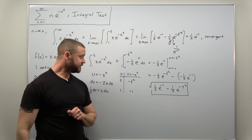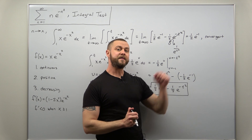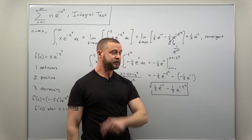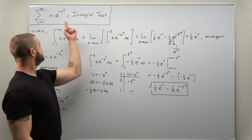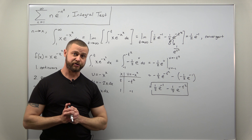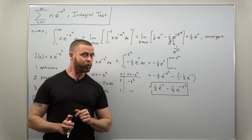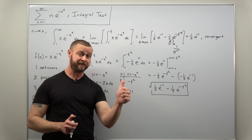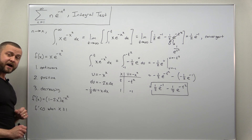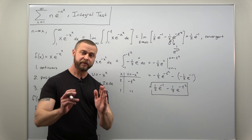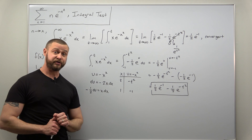Recall what the integral test says: the improper integral and the infinite series do the same thing. Since our improper integral is convergent, the infinite series is also convergent by the integral test. This problem required a bit more work because we had to verify first that f(x) was decreasing by checking the derivative, but it's a good problem that involves a lot of fundamentals from Calculus 2.